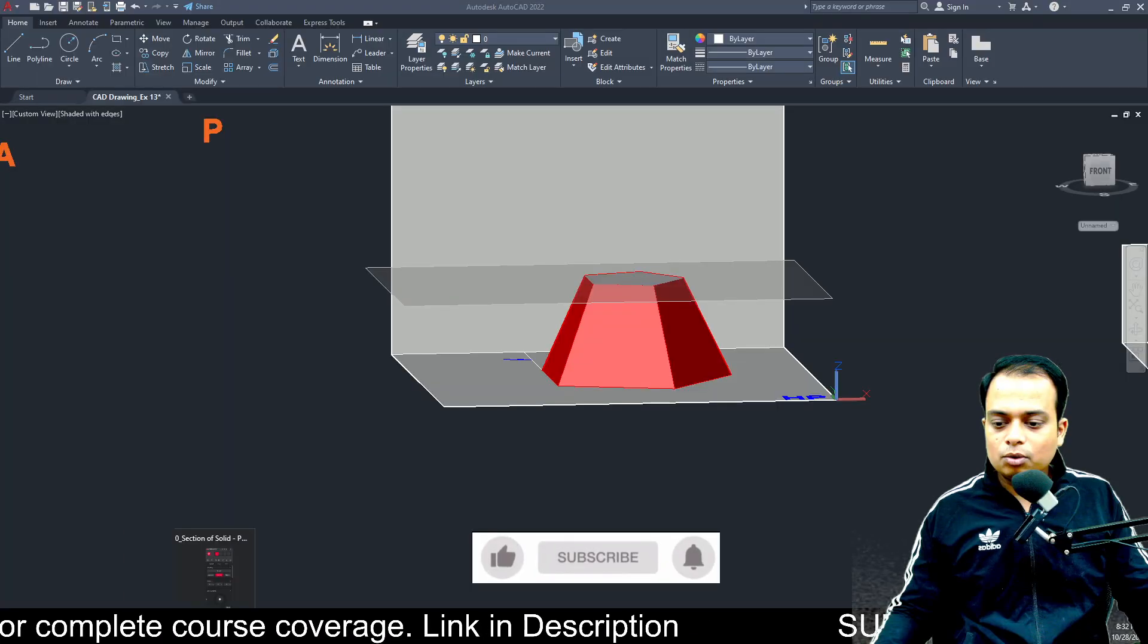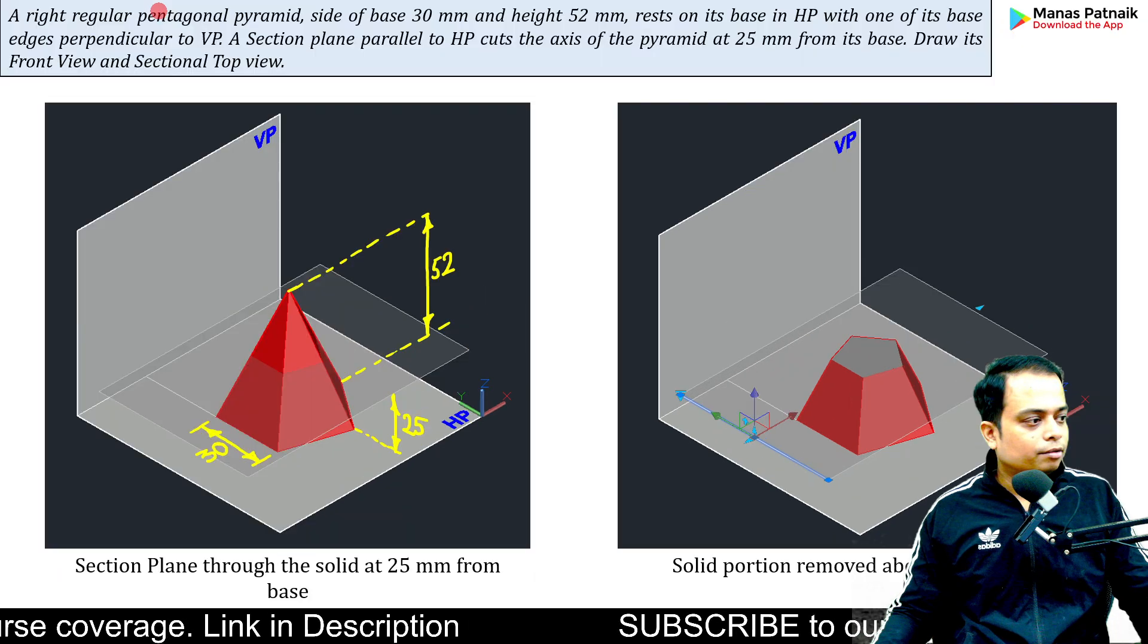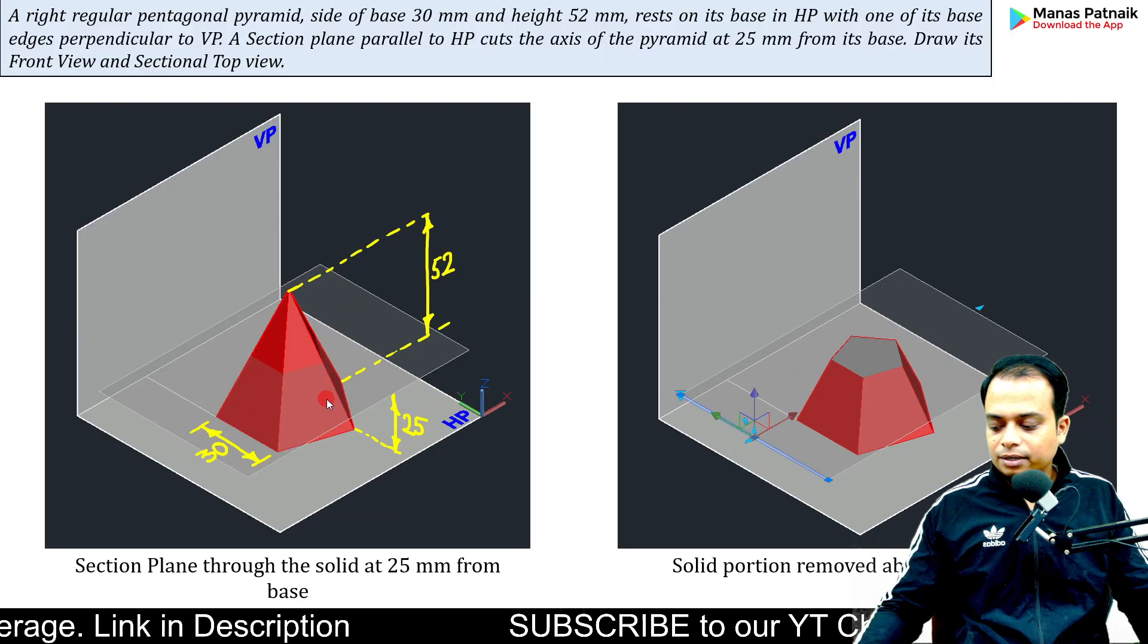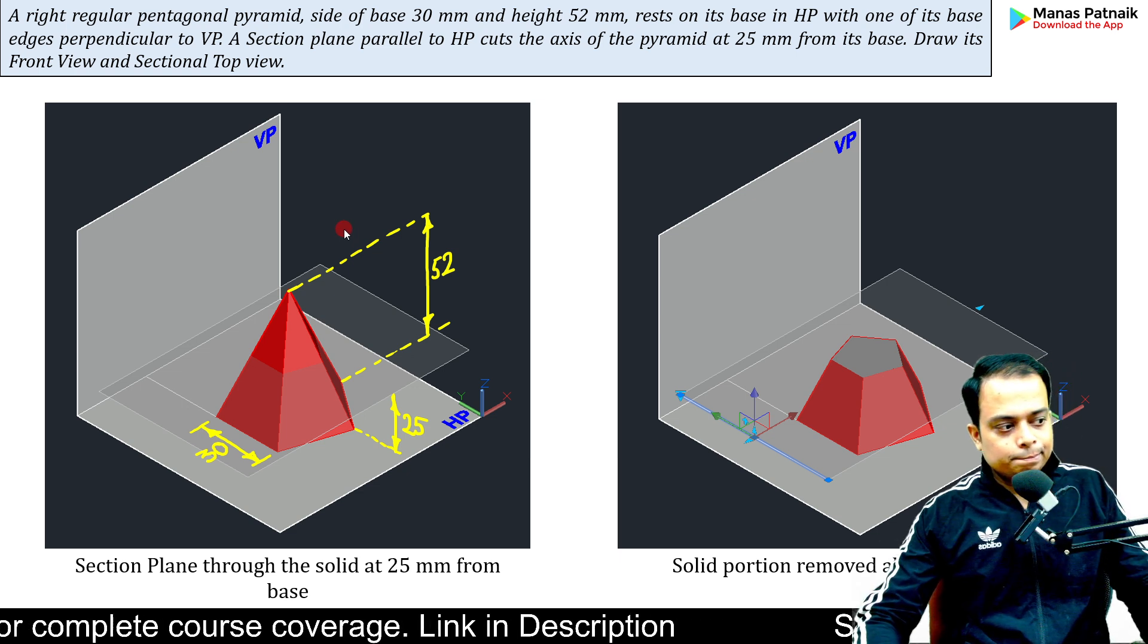Let me explain how this question can be attempted with ease. This is the arrangement. This is the introduction of the cutting plane, and if you remove the portion of the solid above the cutting plane, this is how it would look. This has been done in isometric. What we want is the arrangement from the front and from the top.